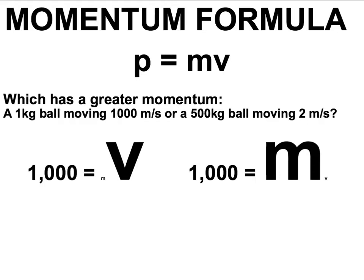Using our formula P equals mv, the only difference between these two scenarios is that one had a ball with a very small mass moving at a very big velocity, while the other had a ball with a very big mass moving at a very small velocity. So if you make one variable big and one small, you could end up with the same momentum.